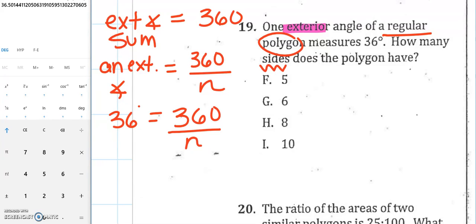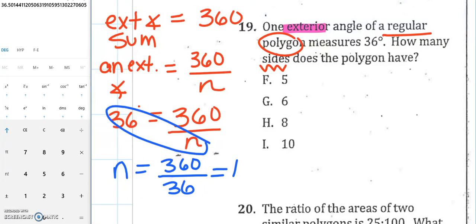Now, to get n, the 36 and the n are going to switch places, just like we do with some of those trig functions. When we have a variable on the bottom, we switch with what it is on the other side of the equal sign. So to get n, we're going to do 360 divided by 36, and that's going to give us 10. So that must mean that our figure has 10 sides. This would be called a decagon, like decade. There's 10 years in a decade. Next problem.